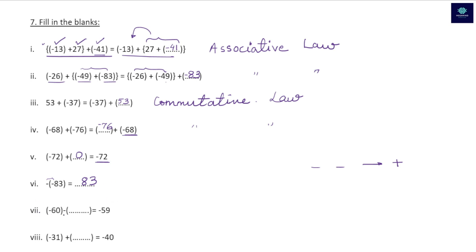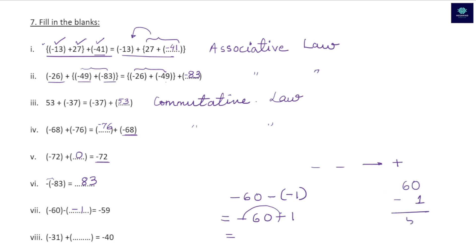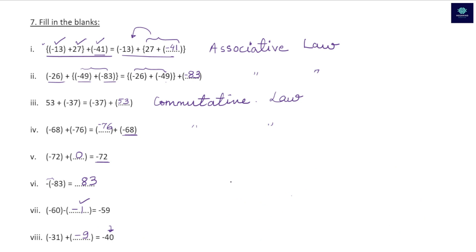Blank seven: -60 - (blank) = -59. The blank is -1. Verification: -60 - (-1) → minus and minus becomes plus, giving -60 + 1. Minus and plus is minus, so 60 - 1 = 59, and the greater number is negative, giving -59. Correct.